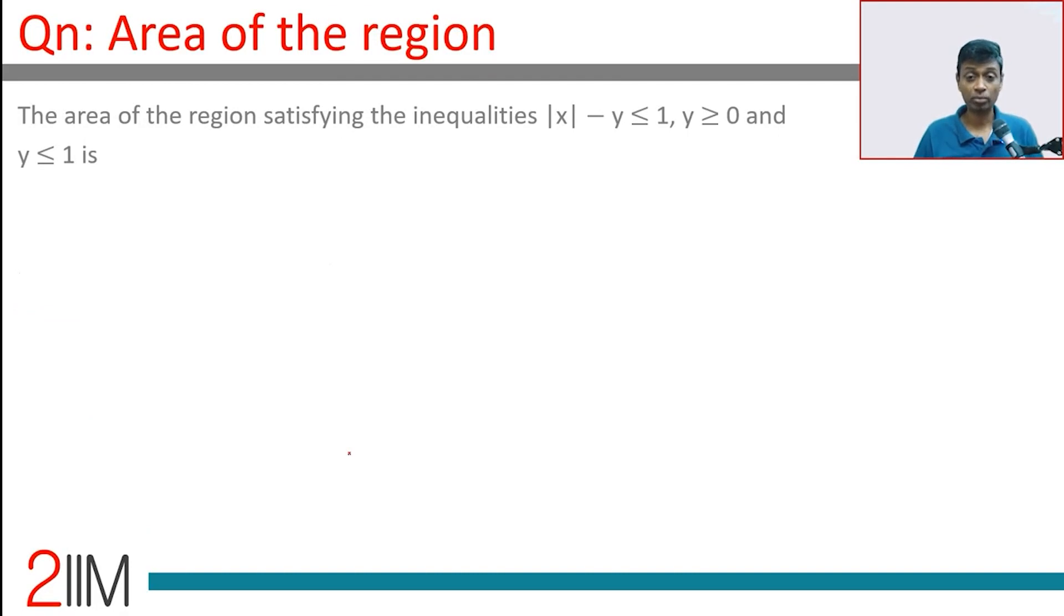The area of the region satisfying the inequalities |x - y| ≤ 1, y ≥ 0, and y ≤ 1 is beautiful.